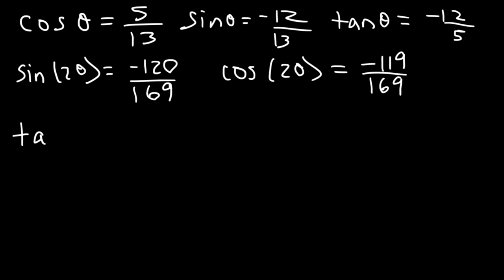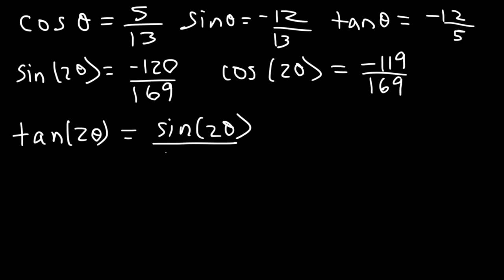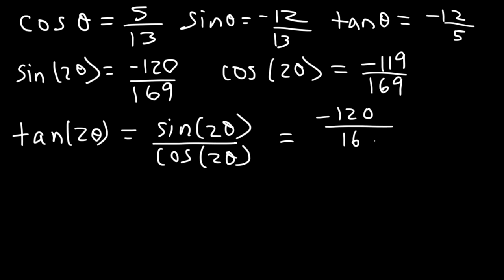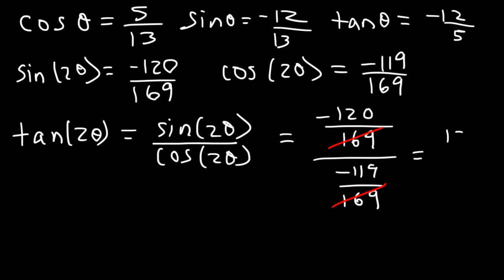Now let's find tangent 2θ using the quotient identity. Tangent 2θ = sine 2θ / cosine 2θ = (−120/169) / (−119/169). We can cancel the 169s and the two negative signs cancel, giving us positive 120/119.